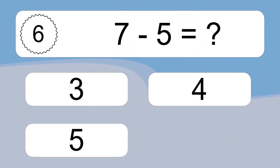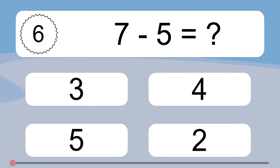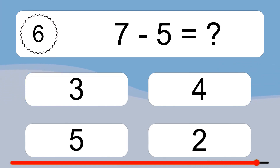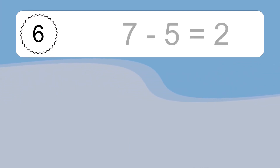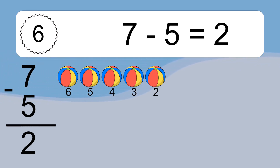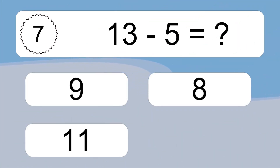7 minus 5 equals what? 7 minus 5 equals 2. Let's count it: 6, 5, 4, 3, 2.